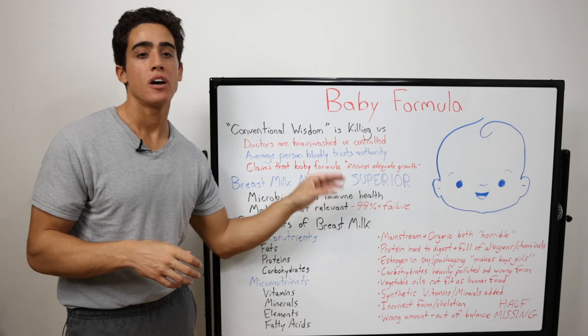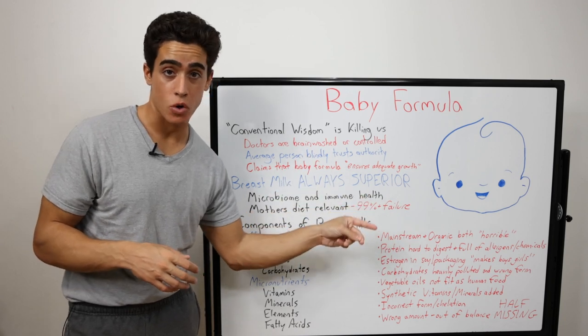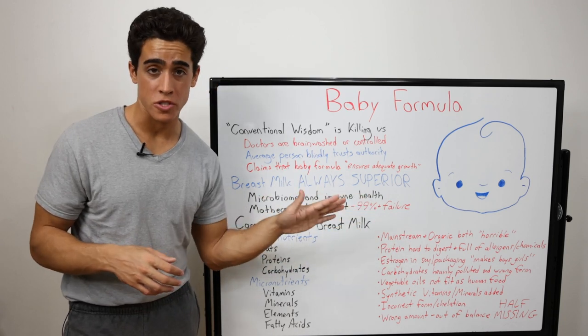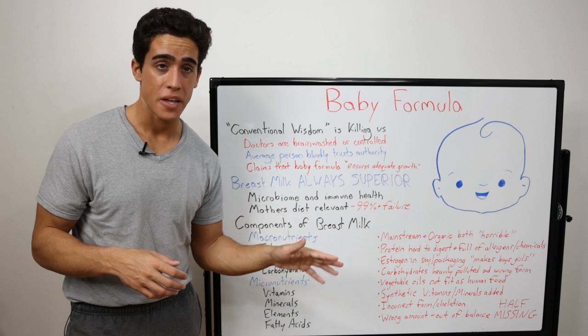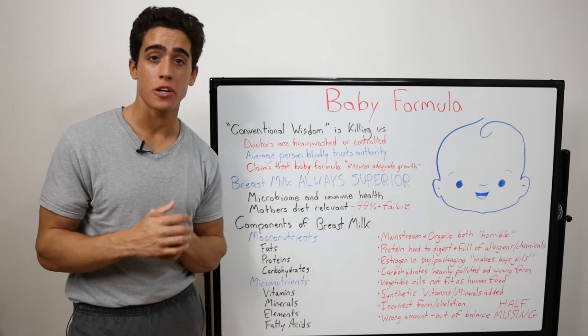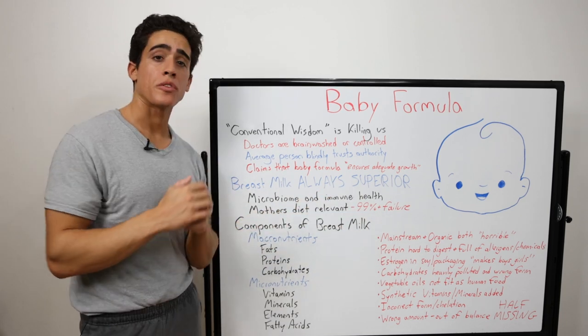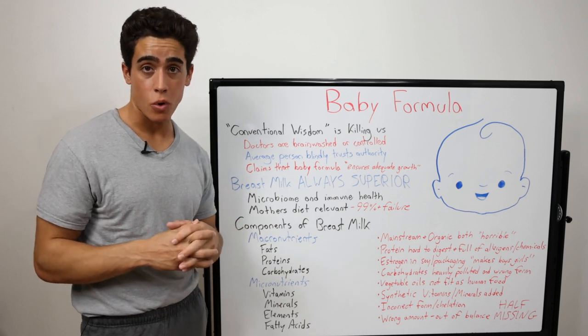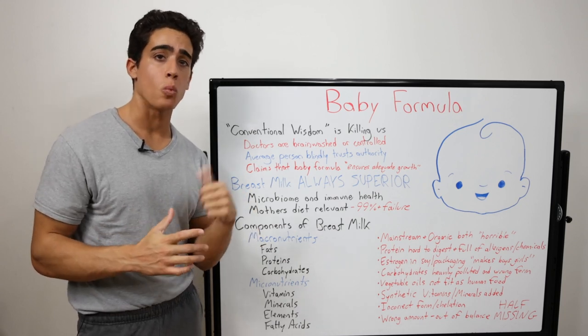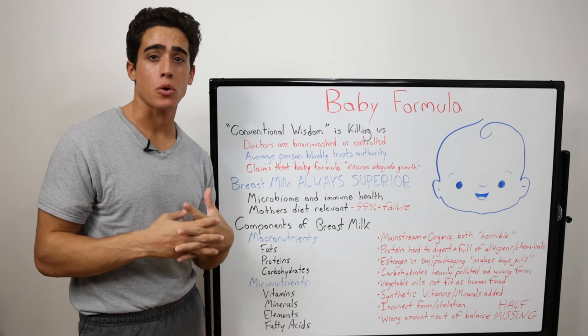Whether you look at a mainstream formula like Gerber or an organic one from Whole Foods that's 10 times the price, the ingredients are similarly horrible. The quality and sourcing of every single component of these formulas is awful from all perspectives imaginable, how it's grown to the bioavailability of the nutrients. Starting with those macronutrient components of formula, the protein is typically from whey or soy, both having their own downsides.